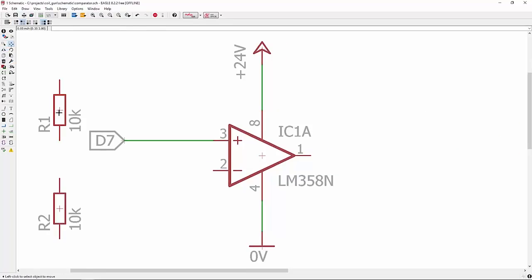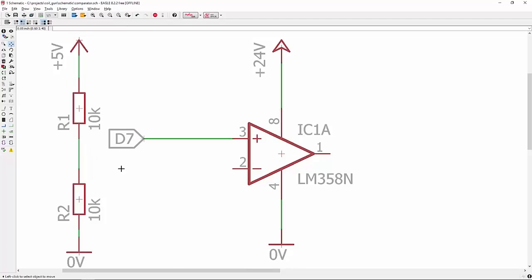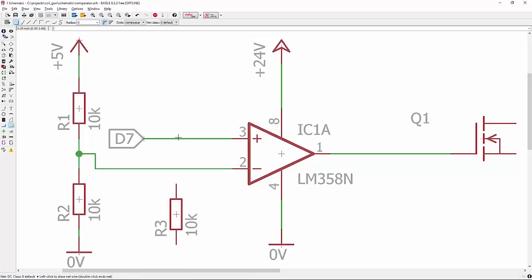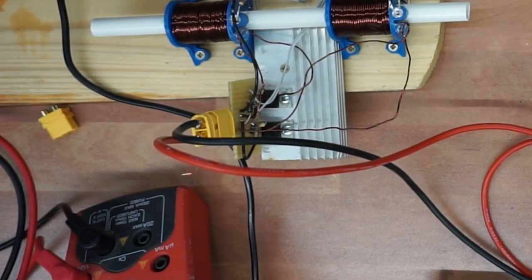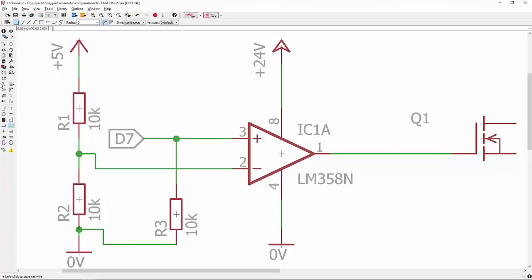For those wondering how I achieved the 2.5 volts, I just simply connected two resistors in series, and the pin in between them is connected to the inverting pin on the comparator. I've also used a pull-down resistor on the Arduino pin, which is completely redundant, but things always go wrong for me, and this just makes me feel a little bit better.